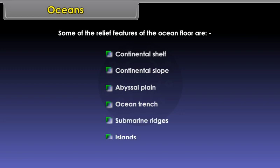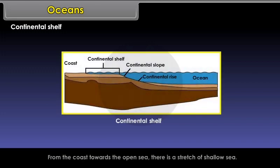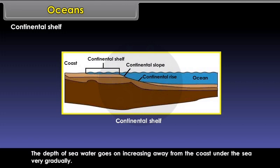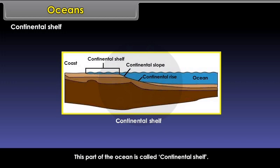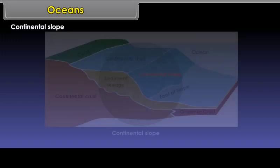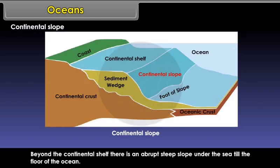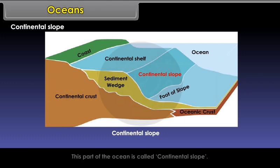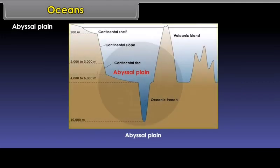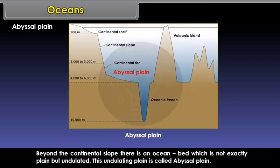Continental Shelf. From the coast towards the open sea, there is a stretch of shallow sea where the depth of water increases very gradually away from the coast. This part of the ocean is called the continental shelf. Beyond it is the Continental Slope, where there is an abrupt steep slope under the sea down to the floor of the ocean. Beyond the continental slope is the ocean bed, which is not exactly flat but undulated — this undulating plain is called the abyssal plain.